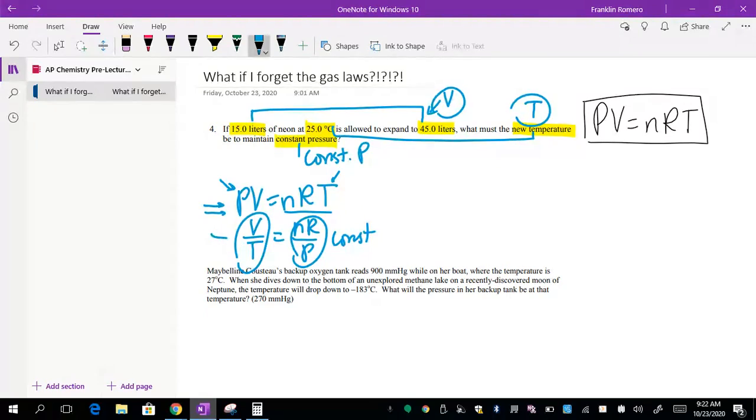If I just simply copy that, that would be V1 over T1 is equal to V2 over T2. So basically it sets up Charles's law for you, even if you happen to forget. I'm going to go ahead and plug in. Keep in mind, since we're working in degrees Celsius, since we're doing a gas law problem, that means we have to convert that to Kelvin.